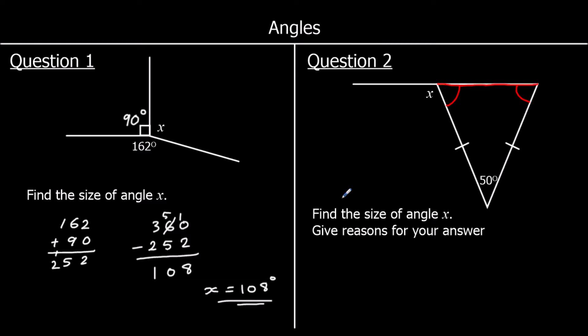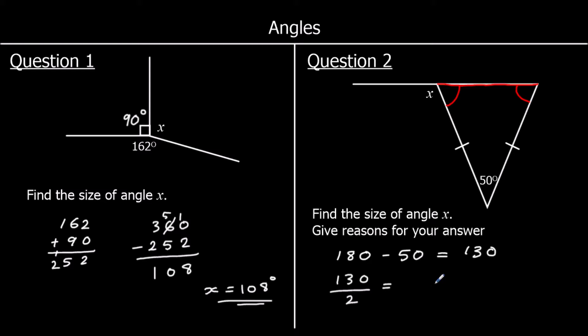The two angles at the base of an isosceles triangle are equal. We know the angles in a triangle add up to 180 degrees. So 180 take away 50 is 130. These two equal angles must add up to 130. If we halve 130, that is 65. So each of these angles is 65 degrees, because angles in a triangle add up to 180 degrees and the two base angles of an isosceles triangle are the same.